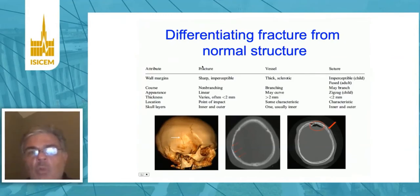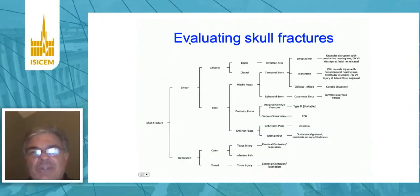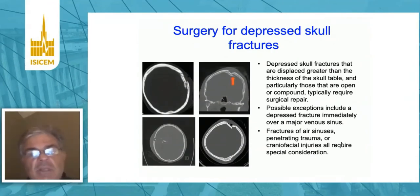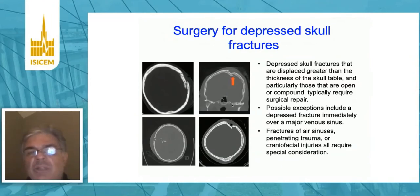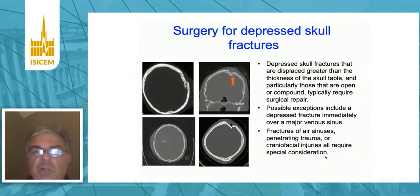Fractures need to be differentiated from normal structures such as vessels or sutures. There are many different types of skull fractures, each with a different implication for management and care. Perhaps most importantly are depressed skull fractures, because these are the ones that require operative intervention. Linear skull fractures are generally predictive of intracranial pathology. A depressed skull fracture, when the bone is depressed greater than the thickness of the skull, requires surgical intervention because there may well be a dural laceration and hence a CSF leak. Here you can see such a fracture — this is a penetrating injury with bone fragments in the skull.